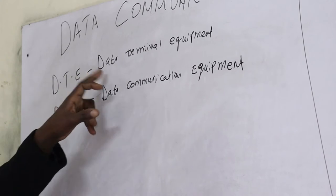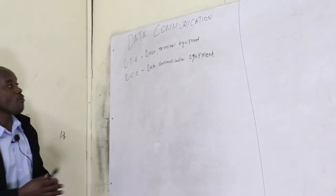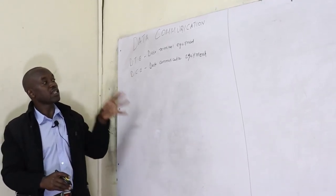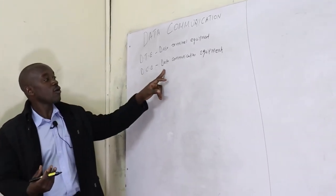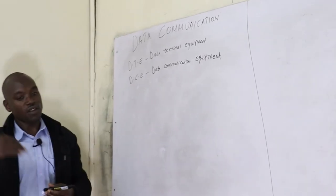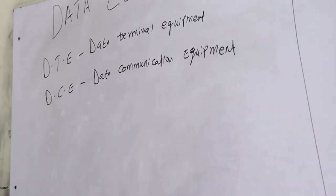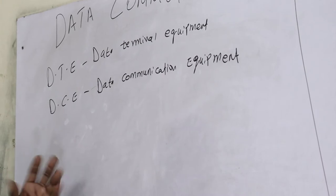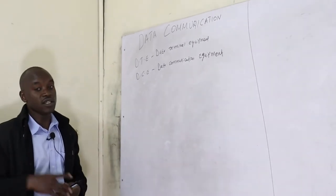A DTE, or data terminal equipment, is anything which is able to generate, transfer, or receive data — like a mobile phone, a printer, or a computer. These can be the source or the destination of data. Data Communication Equipment, DCE, is anything which can change data into a format either for transferring or for reception at the receiver side — like a modem, which changes from analog to digital or digital to analog. Digital means zeros and ones, so they can be interpreted by a digital system.